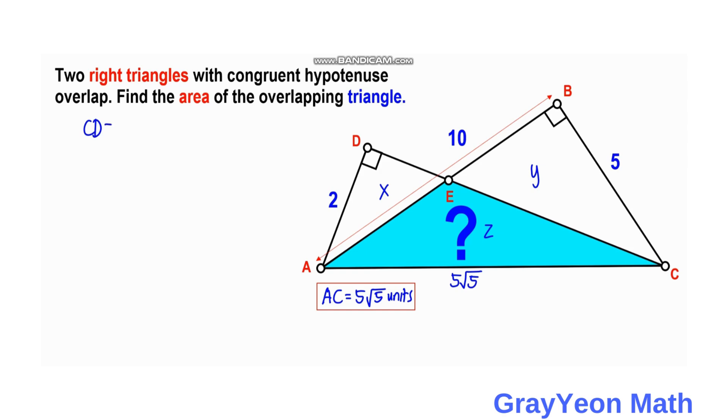CD is equal to the square root of 5 square root of 5 squared minus 2 squared. So CD equals the square root of 125 minus 4, which equals the square root of 121, or square root of 11 squared. So CD equals 11 units.